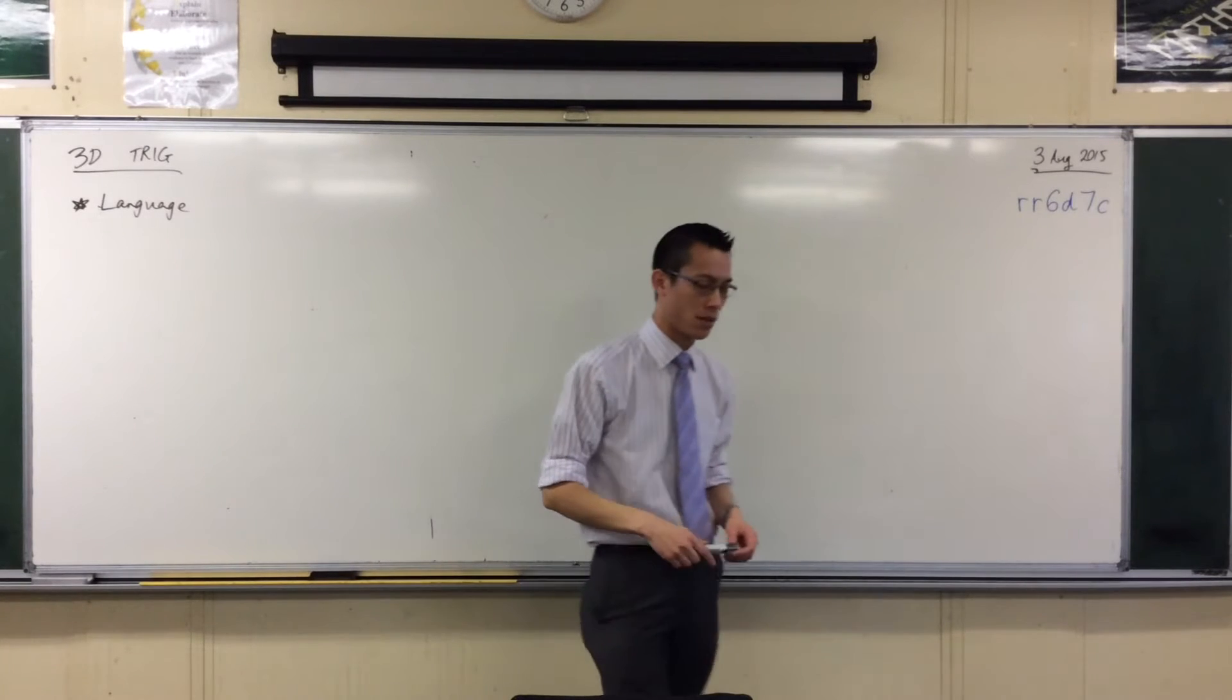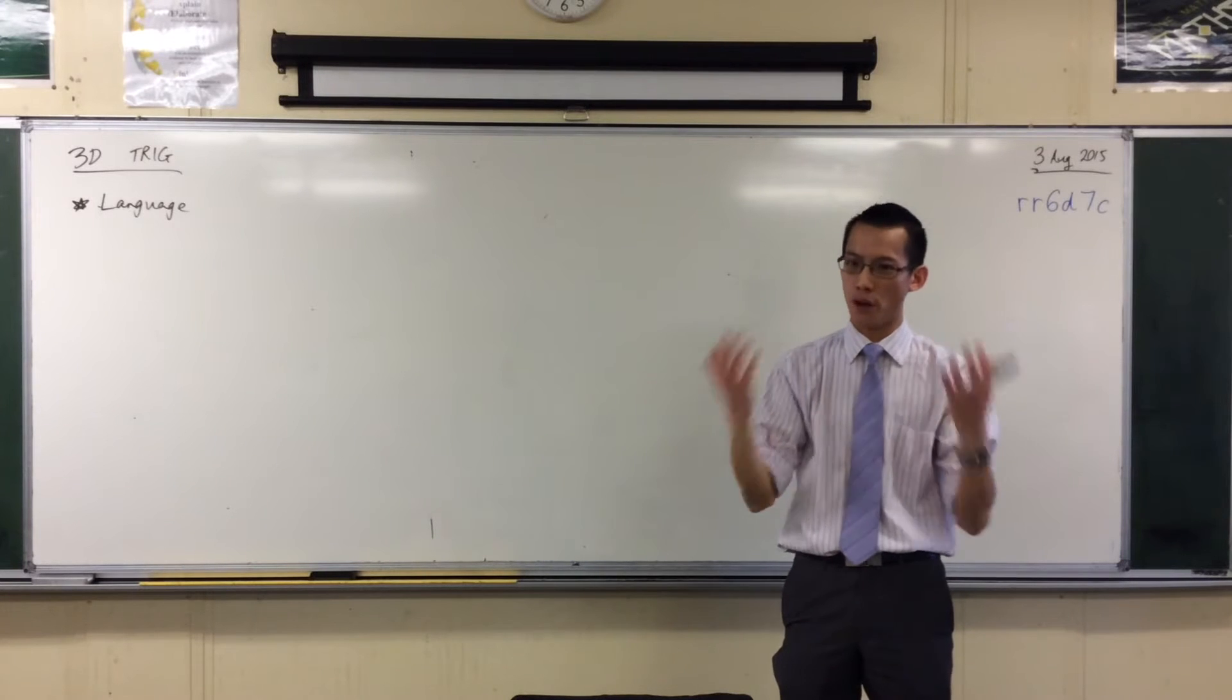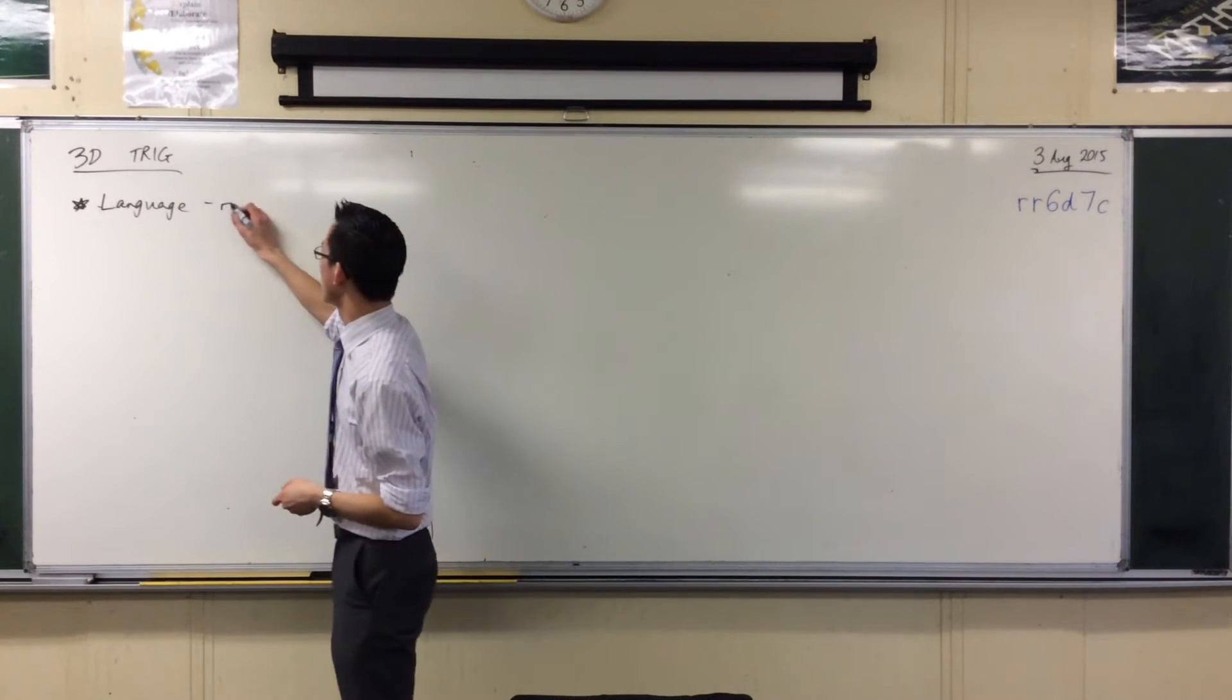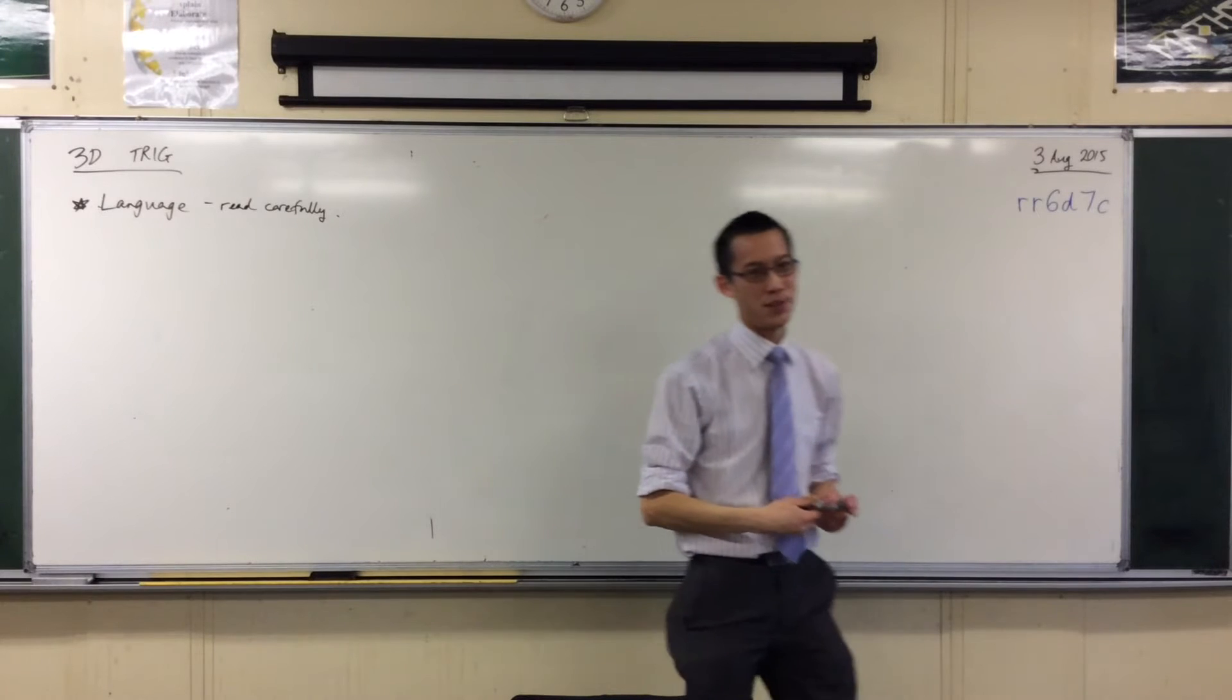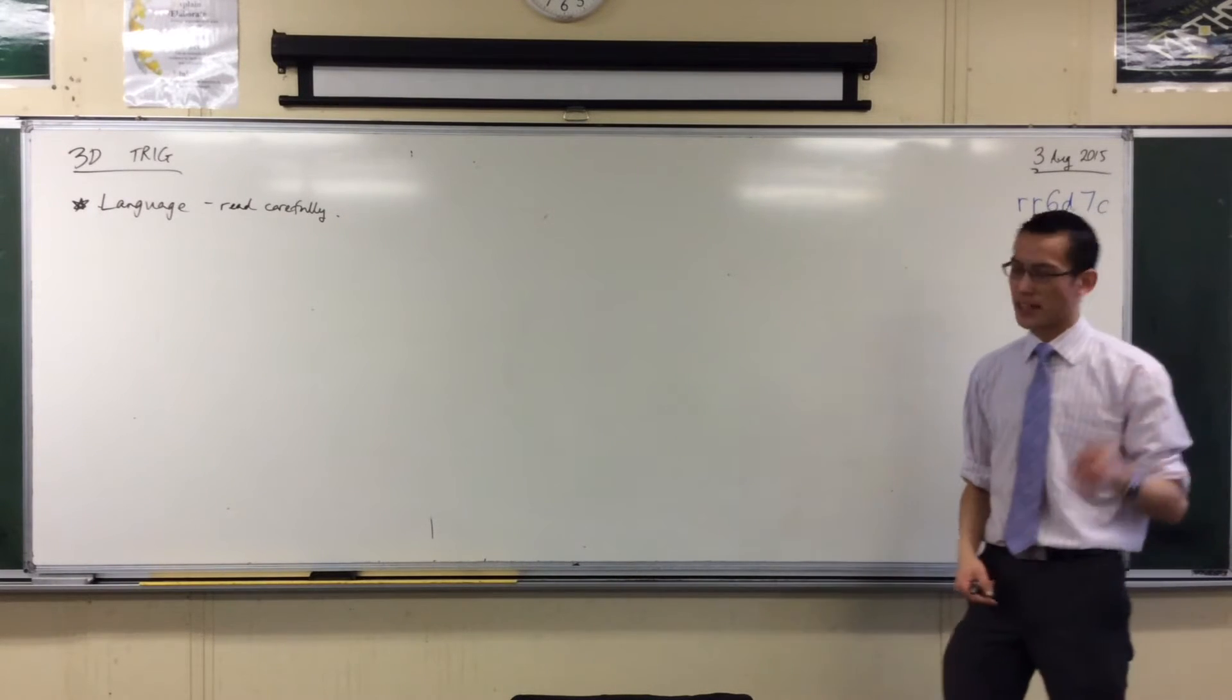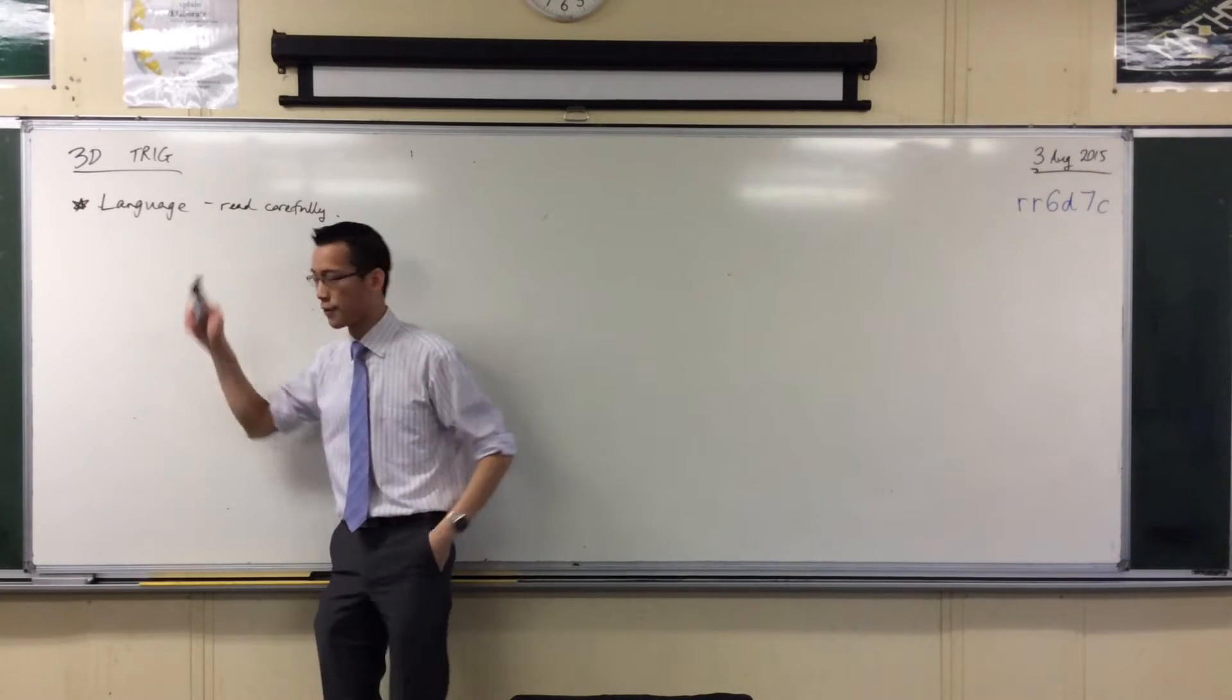So a key extension one skill is verbal communication. In fact, in some of the extension one topics and in two unit, you have to state an answer and it has to be verbal. You've got to explain what's going on. Okay, so my first point, my first tip is read carefully. Read really, really carefully. You would not believe the number of students, the hundreds of students every year who mess up a question, not because they can't crunch the numbers, but because they failed to interpret the mathematical language. Read carefully.